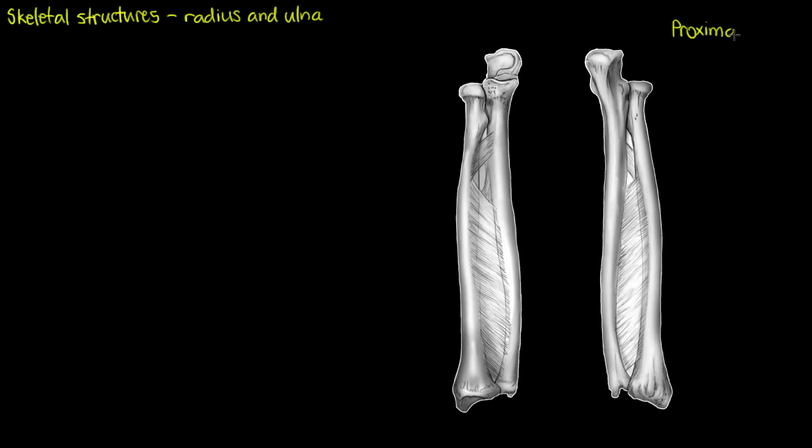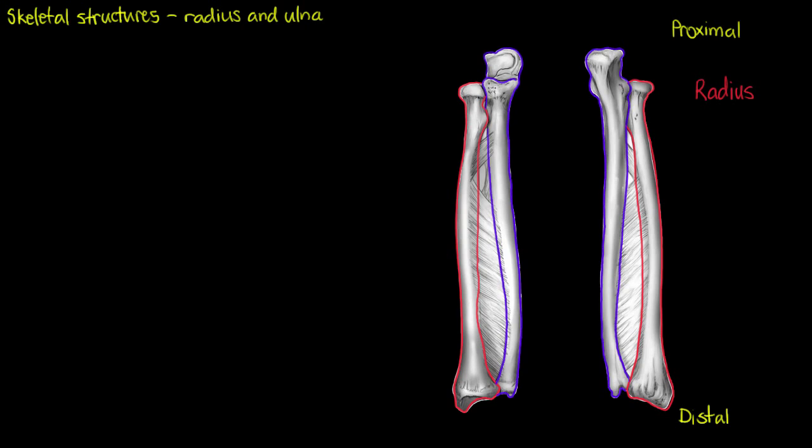First with our directional terms we have the proximal end of the bones and the distal ends. Now in red here I've highlighted our radius, the bone that we see on the lateral side if we're looking from the anatomical position. And the ulna we see medially in purple. So we have our anterior and posterior, with the ulna on the medial side and radius on the lateral.